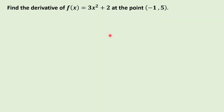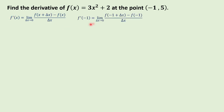Now let us identify the derivative at negative 1 of the function 3x squared plus 2. By the definition of the derivative, to get the slope at negative 1 for this function, we are going to compute the limit of f of (negative 1 plus delta x) minus f of negative 1 over delta x as delta x approaches 0.